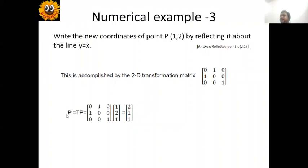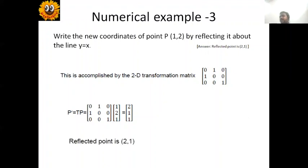The new position P prime equals T times P. T is the reflection transformation matrix. P, the initial position (1,2), is written as a column vector (1,2,1) in homogeneous form. Multiplying gives the answer (2,1,1). The last element refers to the homogeneous representation. So the reflected point P prime is (2,1).